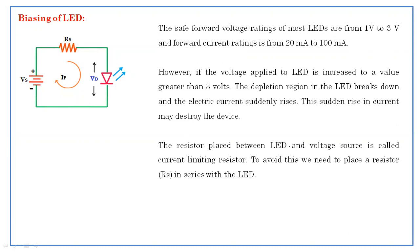The resistor placed between the LED and the voltage source is called a current limiting resistor. To avoid this sudden rise in current, we need to place a resistor in series with the LED. This resistor RS is called the current limiting resistor, and it will protect the LED from overcurrents.